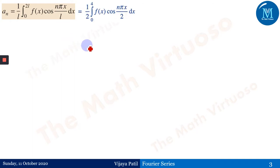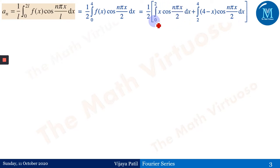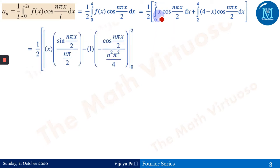Then aₙ = (1/L)∫₀²ᴸ f(x) cos(nπx/L) dx = (1/2)∫₀⁴ f(x) cos(nπx/2) dx. Again we deal with two different integrals: first ∫₀² x cos(nπx/2) dx and second ∫₂⁴ (4−x) cos(nπx/2) dx. We need to apply LIATE for two different integrals. In the first case, this is the first function and this is the second function for LIATE.